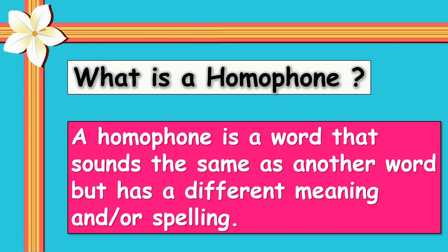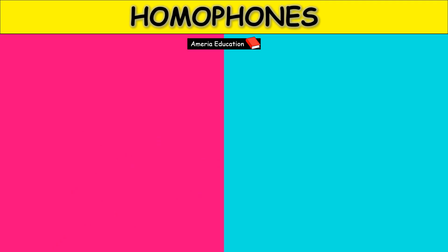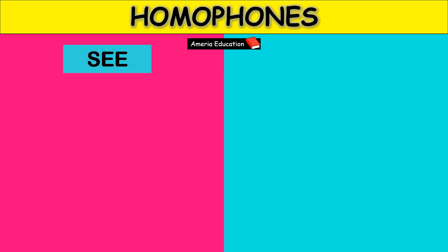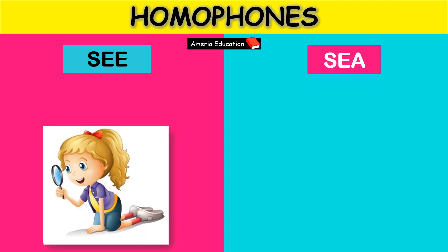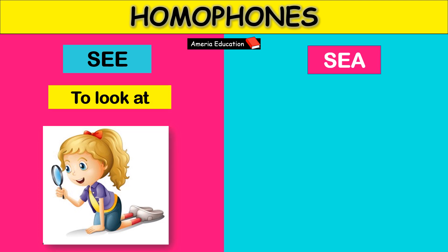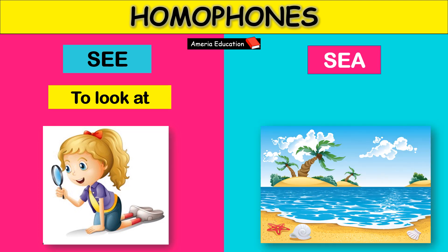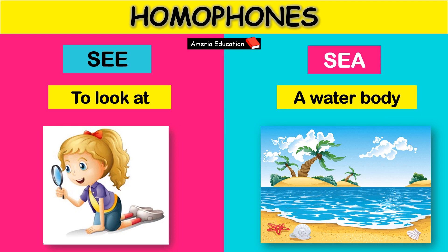Now let's learn some homophones. S-E-E means to look at. S-E-A means a water body.